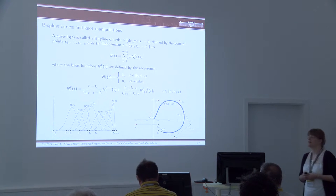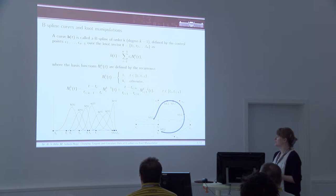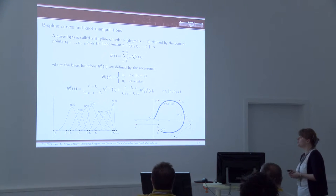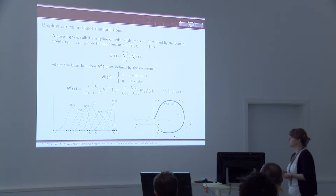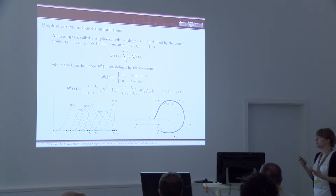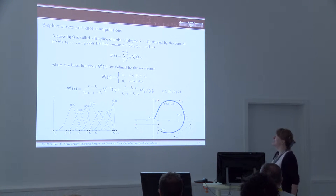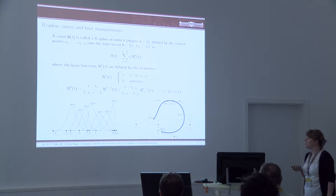P-spline curves are already well known in CAGD. These curves are defined with a node vector and control polygon. Our curve is a linear combination using the control values of certain basis functions — P-splines, the P-spline basis. These basis functions are special, given by a recurrence relation, but it's well known.